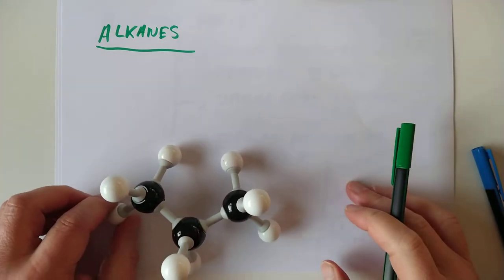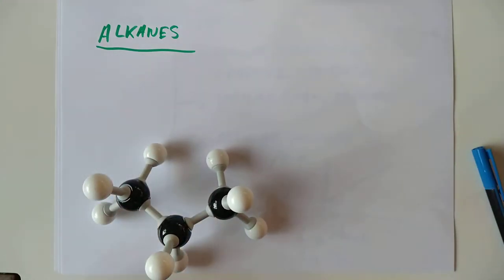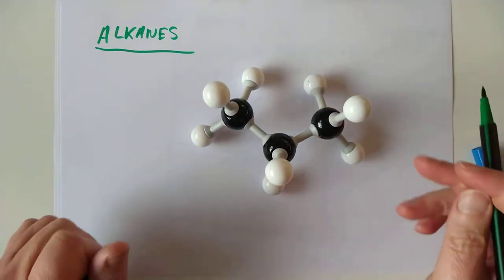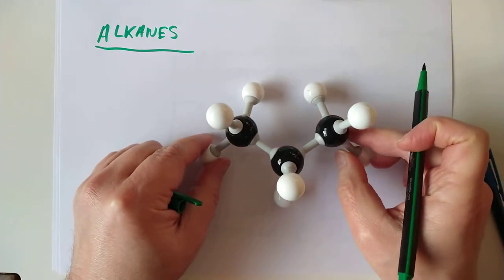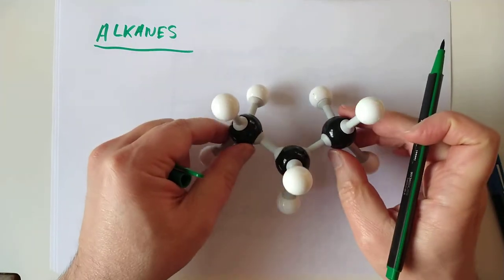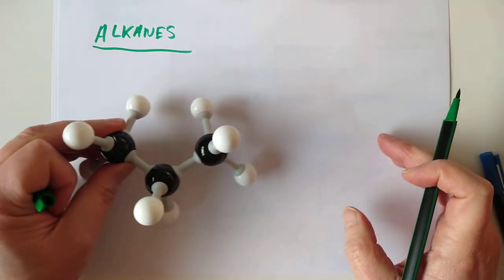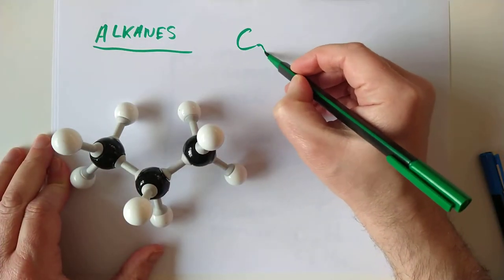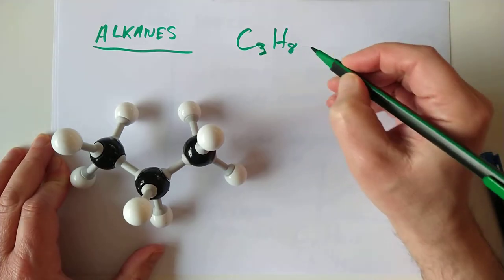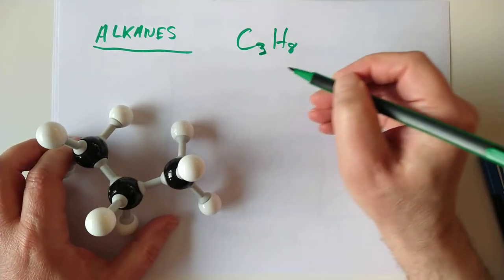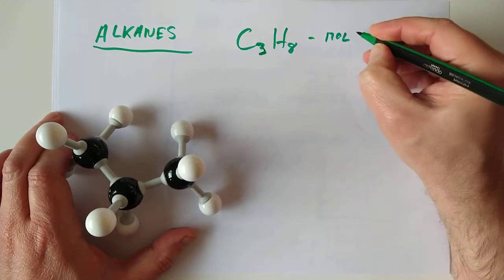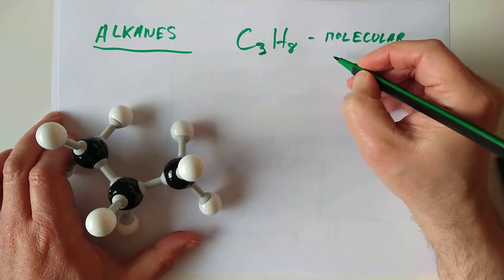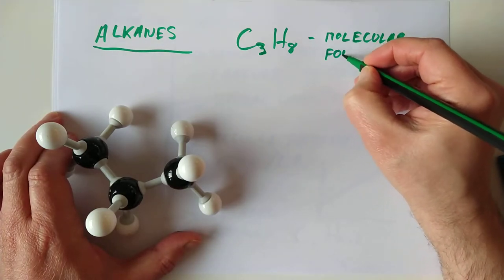Alkanes are the first homologous series you should have remembered from last year. They are basically the simplest — here's one with three carbon atoms, single bonds between the carbon atoms, and each carbon has a valency of 4, so we add hydrogens to fill up all the required bonds. We end up with C₃H₈. This is called the molecular formula — one way of showing this molecule.